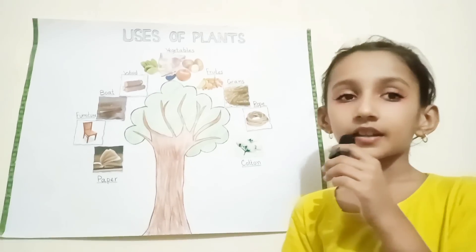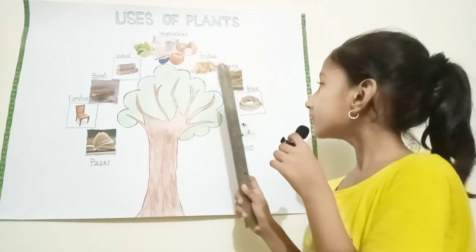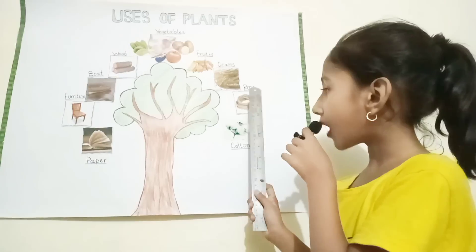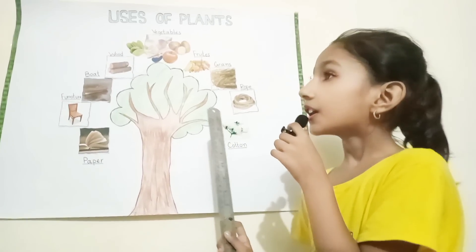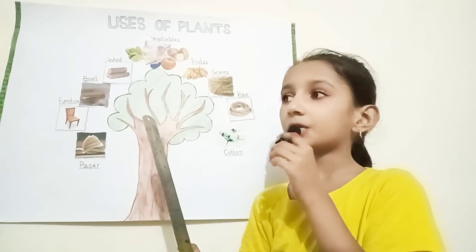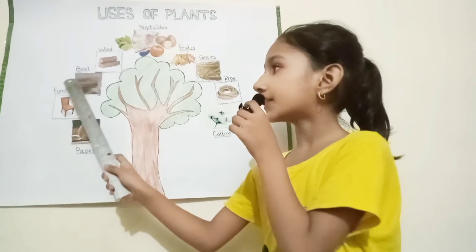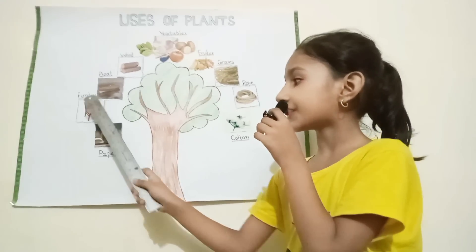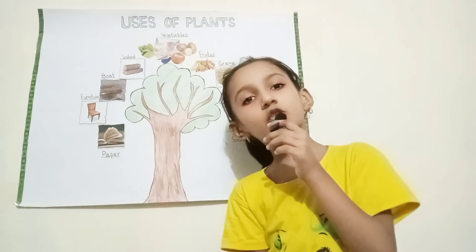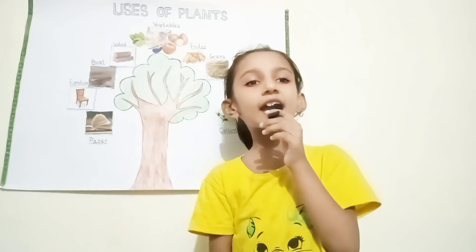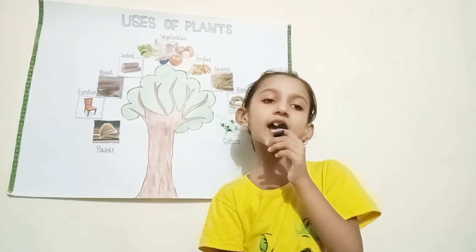We get raw cotton from plants. We also get wood, boat, furniture, and paper too. Please like and subscribe. Bye.